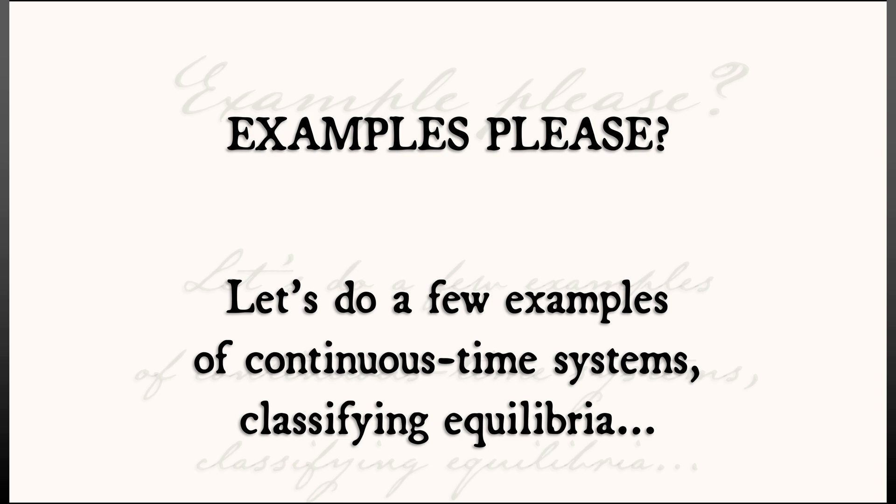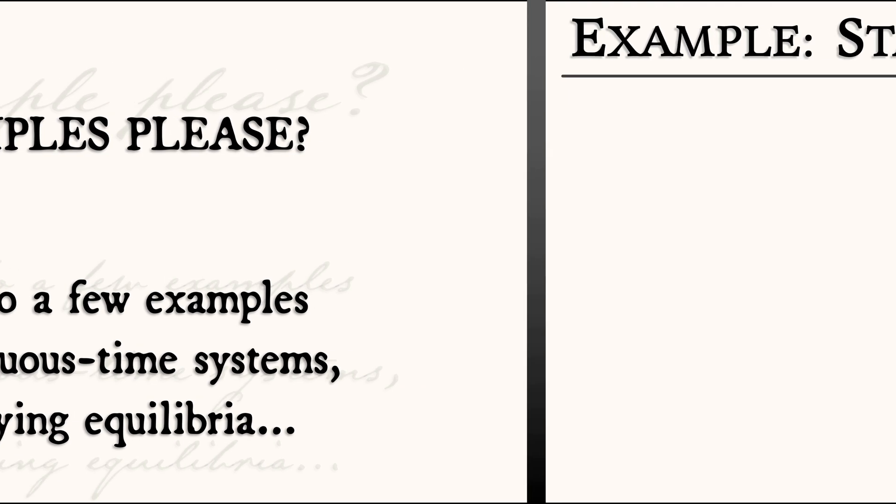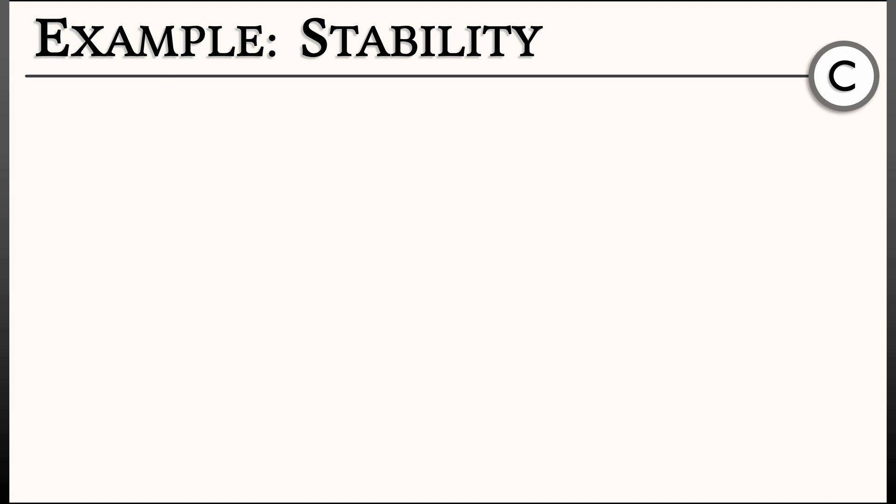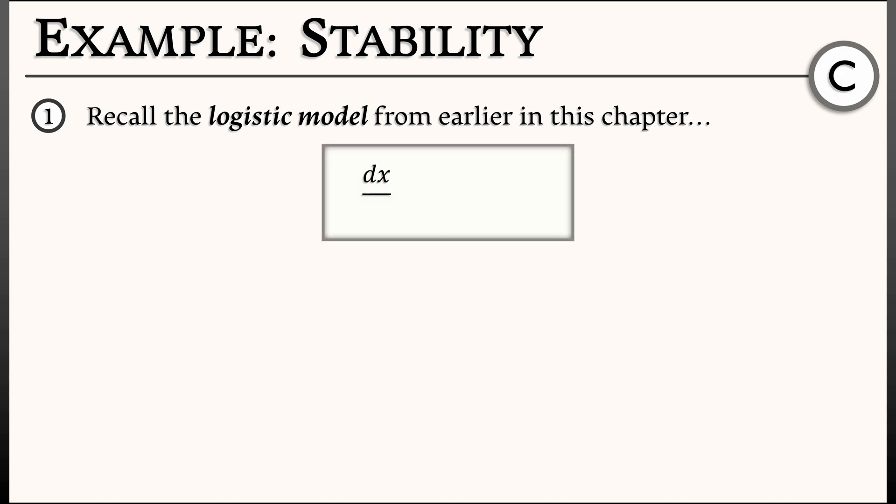Let's begin with a simple example we've seen before. Recall the logistic model from earlier in this chapter. That was a continuous time system. It says dx/dt equals r times x times quantity k minus x.